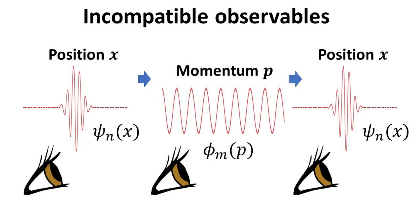Suppose you measure the position of a quantum particle, then measure its momentum, and then measure its position again. The likelihood is that the second position measurement will be quite different from the first. This is because the intervening momentum measurement will collapse the state into a momentum eigenstate, which is delocalized, thus erasing any memory of the outcome of the first position measurement. We therefore say that position and momentum are incompatible observables.